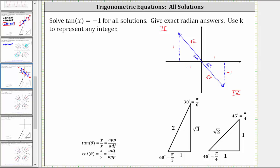Now let's determine all of the solutions. The least positive angle in the second quadrant is π radians minus π/4 radians. With a common denominator of four, that gives us 4π/4 minus π/4, which is 3π/4 radians. So we start with x equals 3π/4, and to find all coterminal angles we add multiples of 2π, giving x equals 3π/4 plus 2πk, where k is any integer.